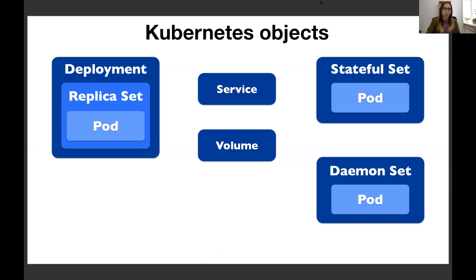In terms of Kubernetes objects, the most basic ones include Deployment, ReplicaSet, and Pod. A Pod is the most basic unit — we deploy our Docker image there. A ReplicaSet is a bit higher up the hierarchy, allowing multiple pod replicas. A Deployment contains the ReplicaSet and has additional features like rolling upgrades, for example.